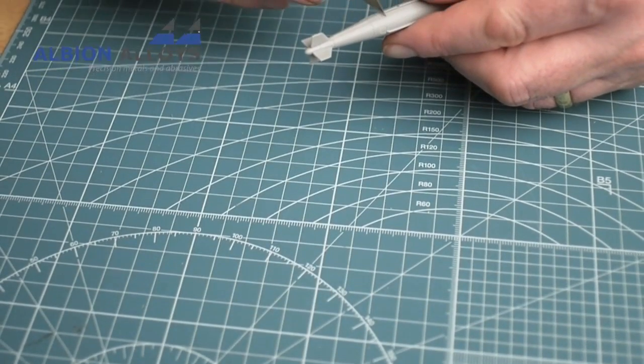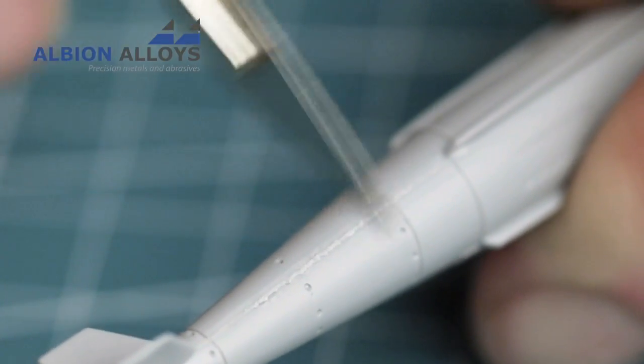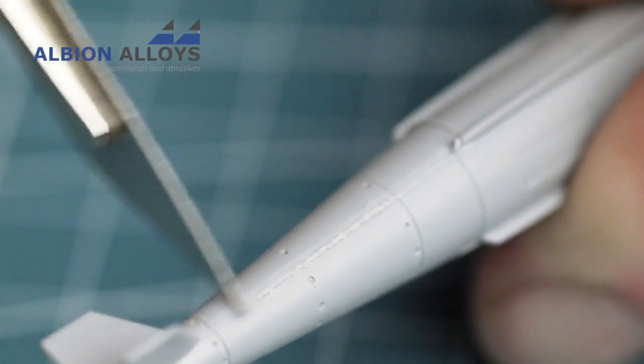When gluing small pieces on like missile fins, no pressure is required. Remove any excess with the scalpel before moving on to using the Flexi-file itself.